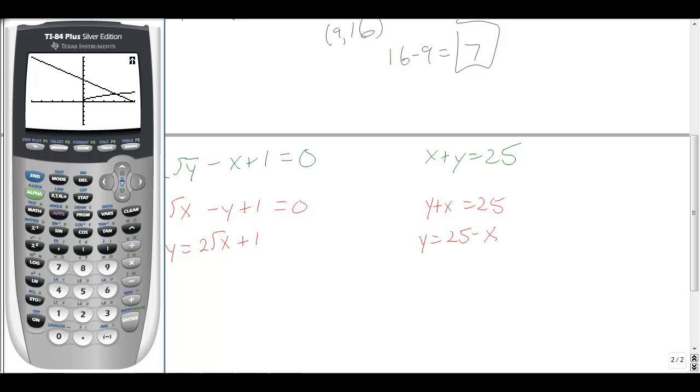And then I can go, second calc. Do my intersect. Use those. Okay, I'll start there. And it finds that same point. Now note, it doesn't find 9, 16. It finds 16, 9. But then you could do the same 16 - 9 = 7. It's just an alternate way to think about this.